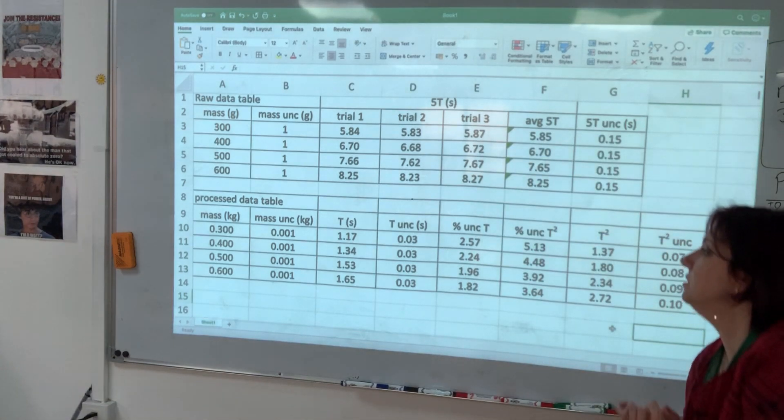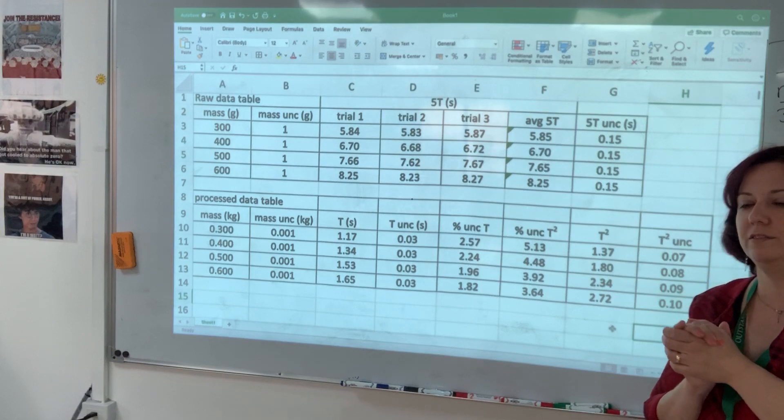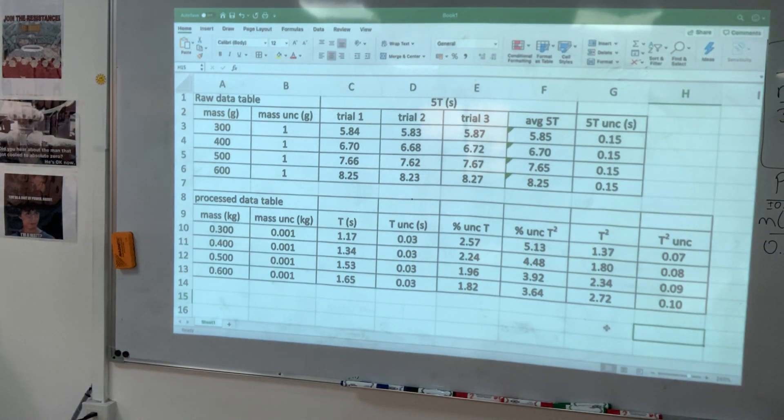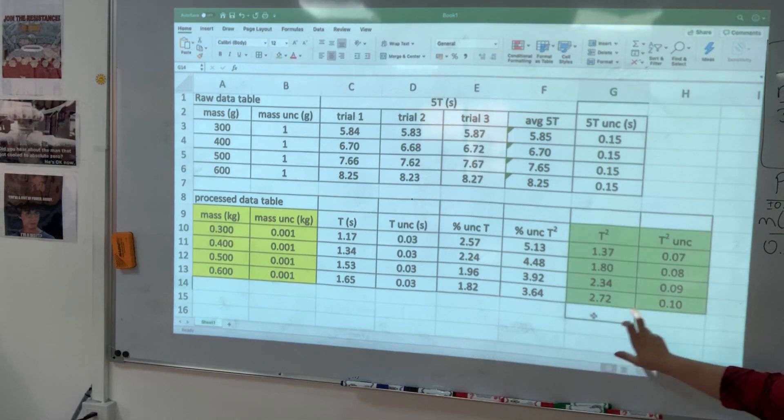So this is how you tell Excel what you want it to do. Now in my graph, I want these values as the mass and the mass uncertainty as my y-axis, and I want these as the x-axis values.